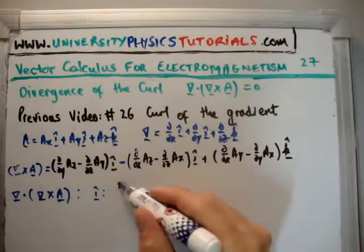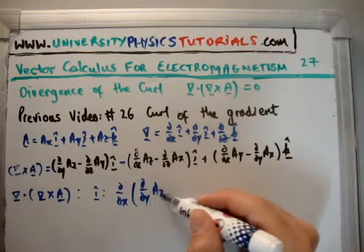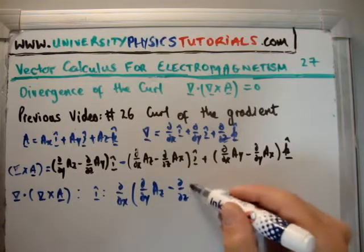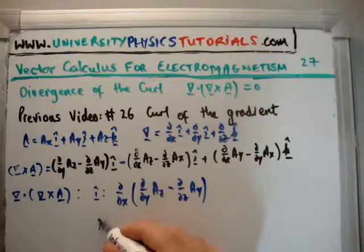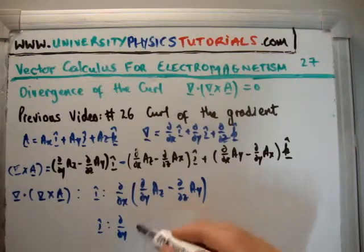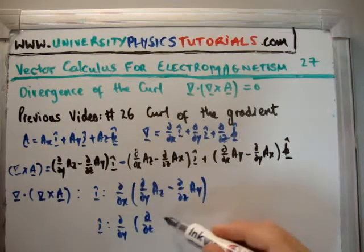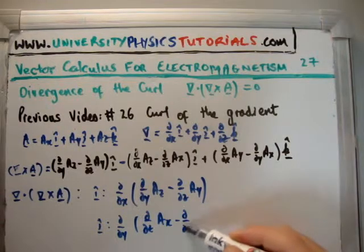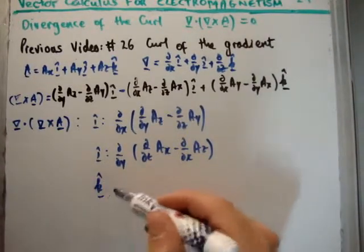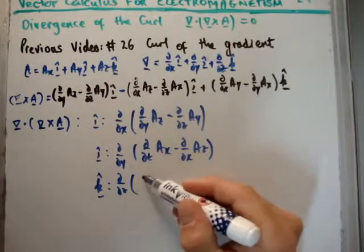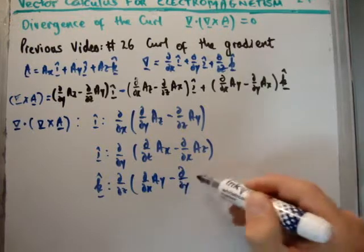So let's take the divergence. So what I need to do is operate del del x in the i-hat direction on what is in the i-hat direction. So that's del del y, A sub z, and it's also del del z, A sub y. Okay, so that's what we get there. Then in the j-hat direction, we're going to get del del y operating on... I'm going to swap this minus sign straight away. So del del z, A sub x, minus del del x, A sub z. That's in the j-hat direction. And finally, in the k-hat direction, we're going to have del del z on del del x, A sub y, minus del del y, A sub x.